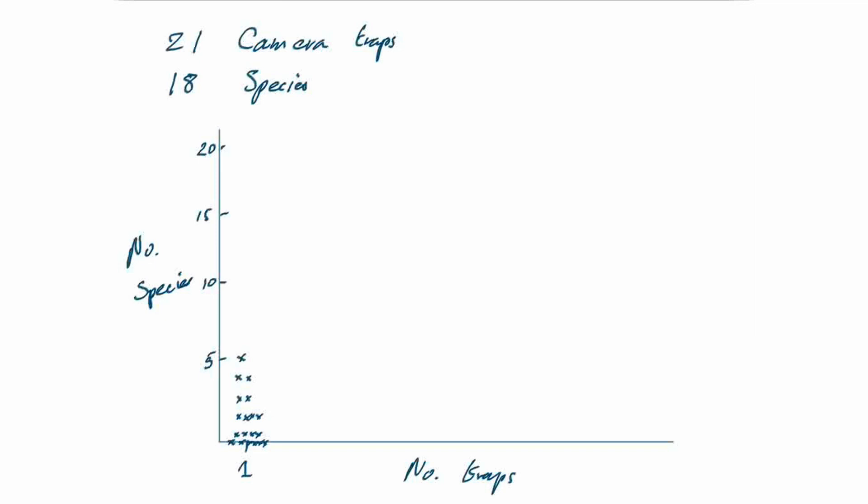We can sample from the data we have and calculate an average number of species we would have seen if we only had a single camera trap. Then we can ask: what would we have seen with two camera traps? We can randomly select pairs of camera traps from our dataset — there are actually 210 different combinations of pairs from 21 camera traps — and calculate how many species each pair would have detected. The maximum from a pair would be nine, but many combinations would give fewer, and we can work out a mean number of species for two traps.